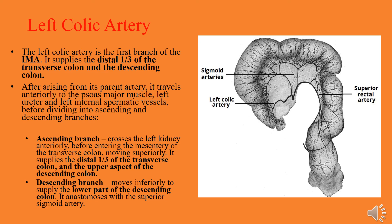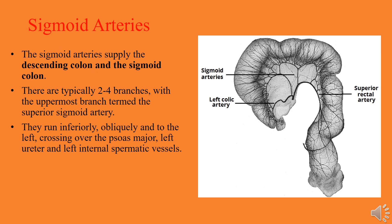The descending branch of the left colic artery supplies the lower part of the descending colon. The sigmoid arteries then supply the descending colon and the sigmoid colon. They typically form four branches with upper and lower parts of the superior sigmoid artery, running inferiorly and to the left, crossing over the psoas major, left ureter, or left internal spermatic vessels.